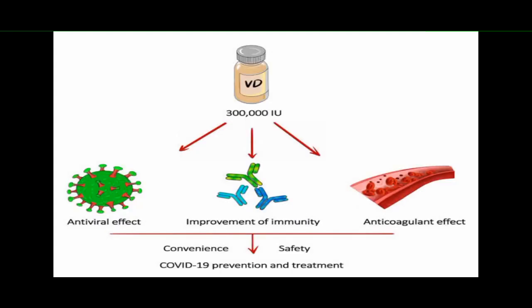Low vitamin D levels are associated with an increased risk of respiratory diseases including tuberculosis, asthma, chronic obstructive pulmonary disease, as well as viral and bacterial respiratory infections. Recent research indicates that sufficient vitamin D levels may help people with COVID-19 avoid adverse outcomes. The Journal of the American Medical Association discovered a correlation between vitamin D deficiency and a higher risk of COVID-19. Another study found that COVID-19 patients who had adequate vitamin D levels had a 51.5% lower risk of dying from the disease and significantly reduced risk of complications.